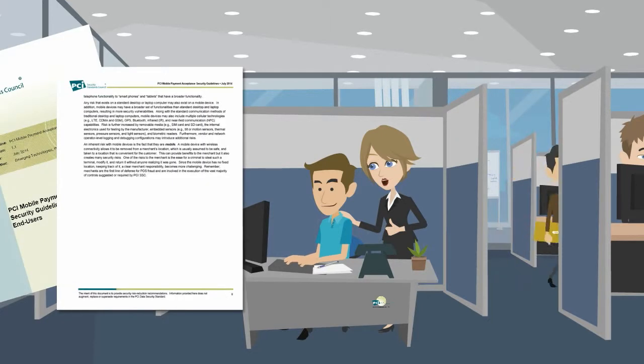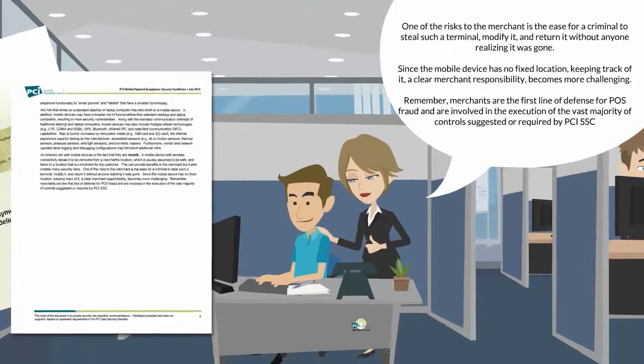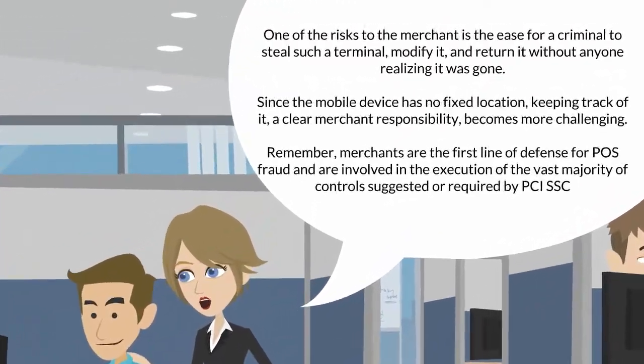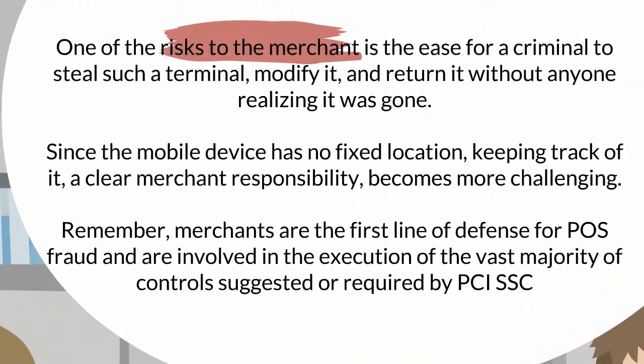Together with her colleague, Paula studies the guidance for securing mobile devices and finds a sentence that reads: 'One of the risks to the merchant is the ease for a criminal to steal such a terminal, modify it and return it without anyone realising it was gone.' Since the mobile device has no fixed location, keeping track of it — a clear merchant responsibility — becomes more challenging. Remember, merchants are the first line of defence for POS fraud, and are involved in the execution of the vast majority of controls suggested or required by PCI SSC.